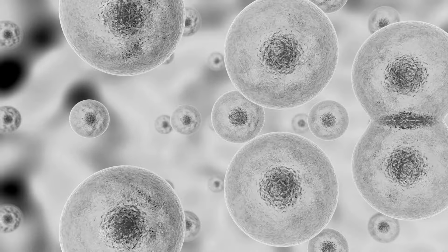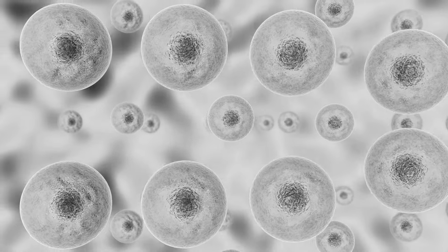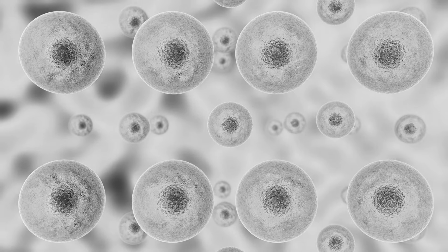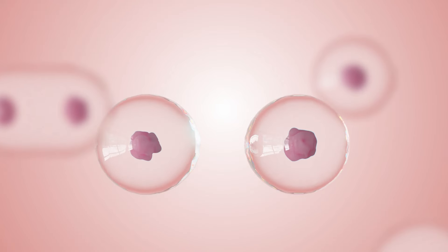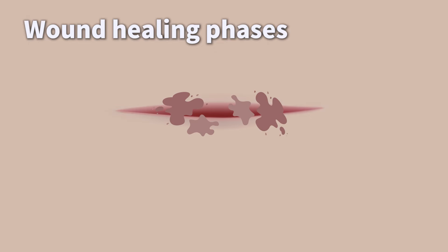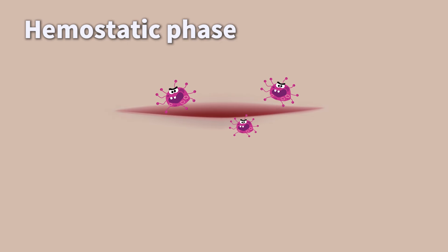When a wound occurs, our body immediately begins to heal itself through cell division. To summarize the wound healing process: first, blood coagulates in the wound, blocking the entry of pathogens, and then an inflammatory reaction occurs to remove the pathogens from the wound.